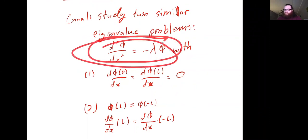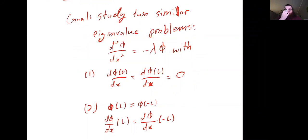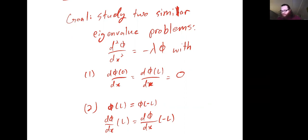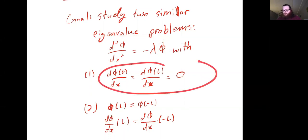So the first eigenvalue problem: we're prescribing the derivative at the endpoints of a one-dimensional rod, and we're prescribing those derivatives to be zero. In the context of heat flow, you can think of this as the ends of the rod are insulated, so there's no flux. We can treat this purely mathematically and ask what kind of functions φ solve this ODE with these boundary conditions.